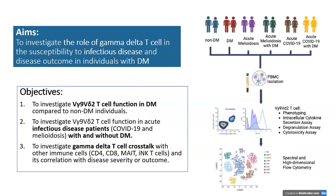In the first year of the project, I investigated the function of gamma delta T cells in diabetes mellitus patients compared to non-DM patients. In the next phase, I plan to investigate their function in acute melioidosis and acute COVID-19 patients with and without diabetes mellitus.